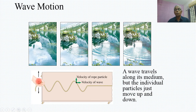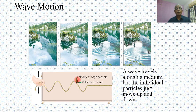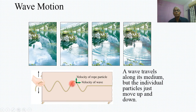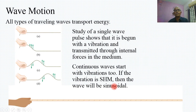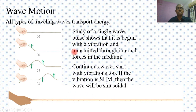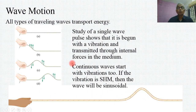Likewise, if I take a rope, a wave travels along its medium but the individual particle just moves up and down, as I can show you in the animated picture. When this rope is made to move in the upward and downward direction, a kind of wave motion is created. A single wave pulse shows that it begins with the vibration and is transmitted through the internal force in the medium.